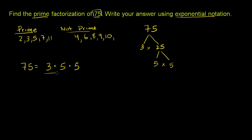So this is a prime factorization. But they want us to write our answer using exponential notation. So that just means if we have repeated primes, we can write those as an exponent. So what is 5 times 5? 5 times 5 is 5 multiplied by itself two times. This is the same thing as 5 to the second power.